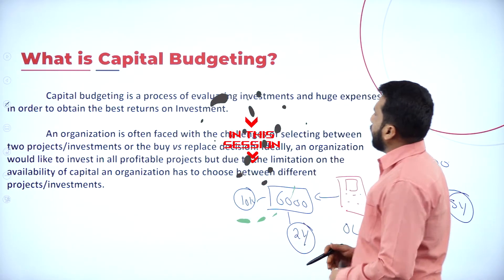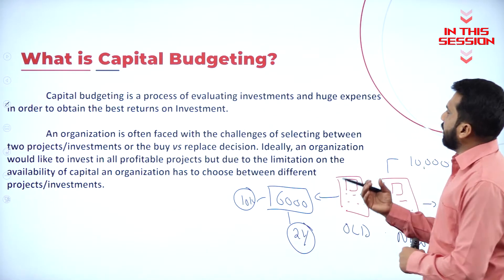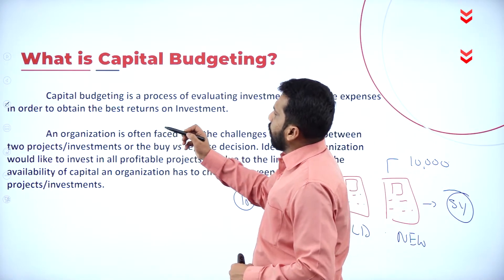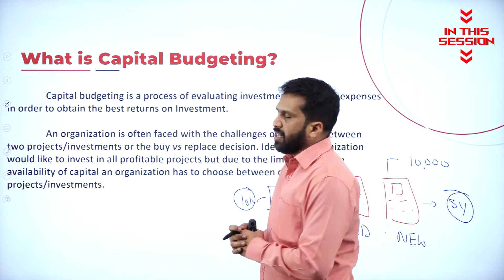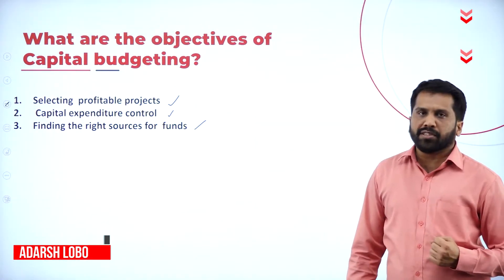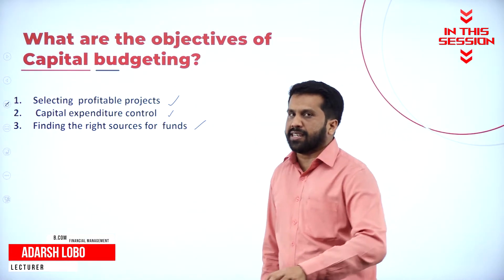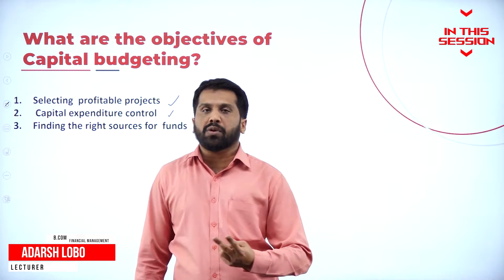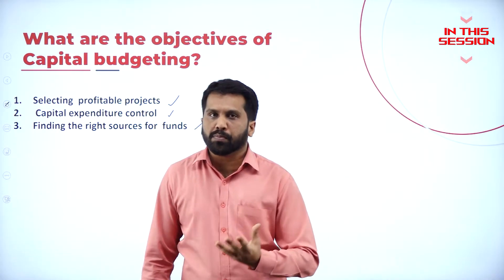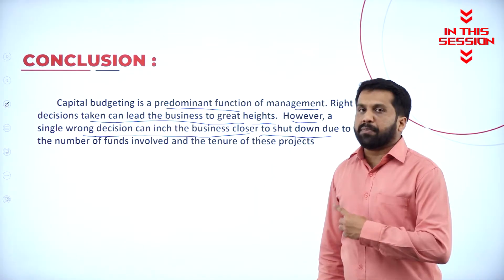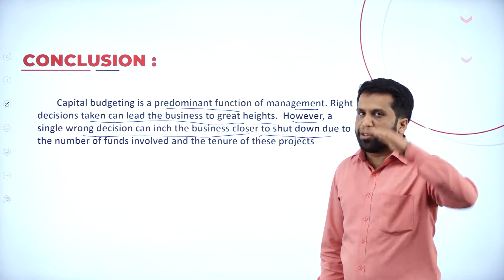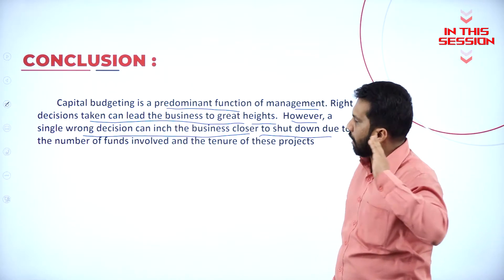Capital budgeting is a process of evaluating investment and huge expenses in order to obtain the best return on the investment. Selecting a profitable project means if there are 10 projects, you have to select two or three which are profitable and give you more profit. Capital investment is huge — if you take the wrong decision, your company directly goes down.